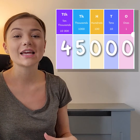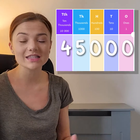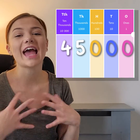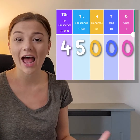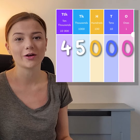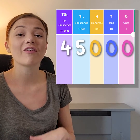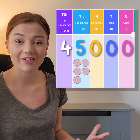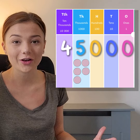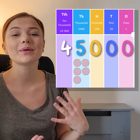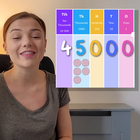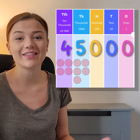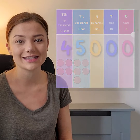As you can see, we have zero ones, zero tens, and zero hundreds, so we do not need any counters in any of those columns. We have a five in the thousands column, which means we need five counters in that column. And we have a four in the ten thousands column, which means we need four counters in the ten thousands.